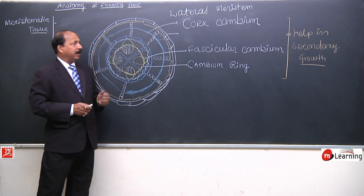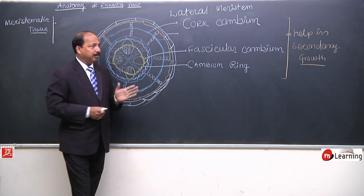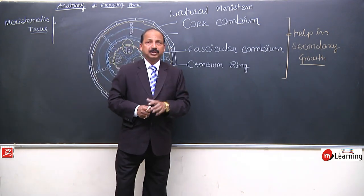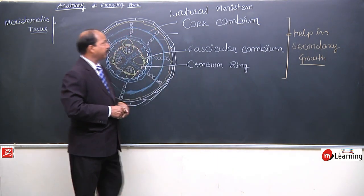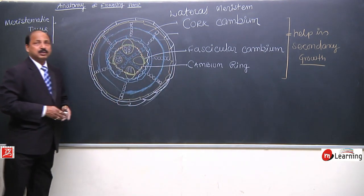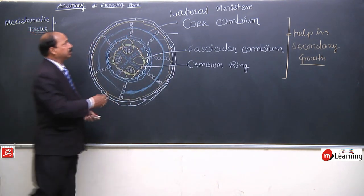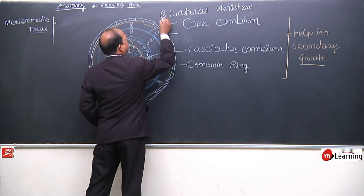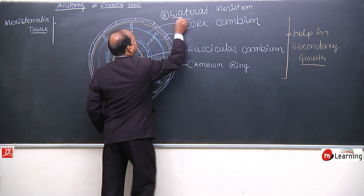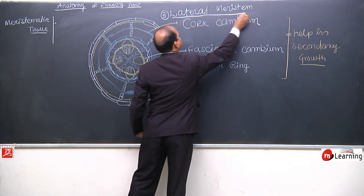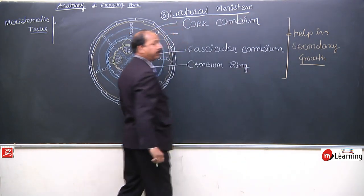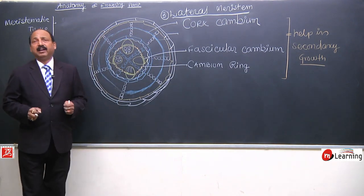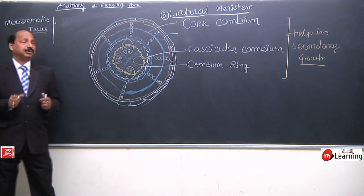Now, look at the third part. Meristematic tissue on the basis of position — the third type is called lateral meristem. Lateral is a position.